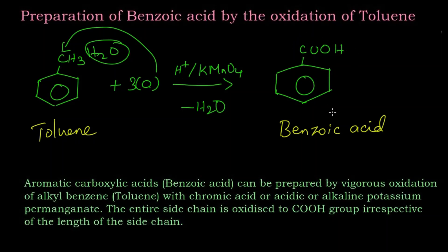This is irrespective of the length of the side chain — whether it is a methyl group or an ethyl group (ethyl benzene), whatever it may be, the entire side chain is oxidized to COOH group, and finally we get an aromatic carboxylic acid. In this reaction, toluene is oxidized to benzoic acid. Thank you.